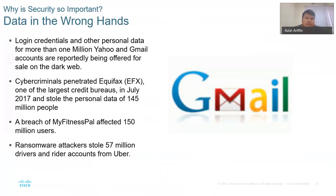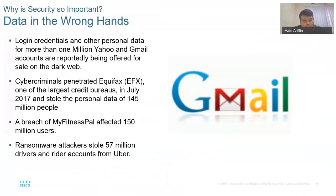Every year — in fact every month — there must be a major breach to well-known systems. For example, a ransomware attacker stole 57 million driver and rider accounts from Uber — and Uber is a big company.